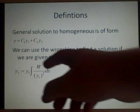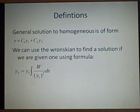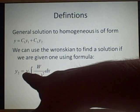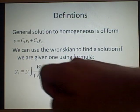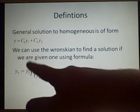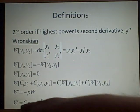The general solution is given in the form y equals c1 y1 plus c2 y2. And we can use the Wronskian to find a solution if we are given one of the solutions. So if we've given one of the solutions y1, then we can use y2 to find the rest, and the W is calculated here.